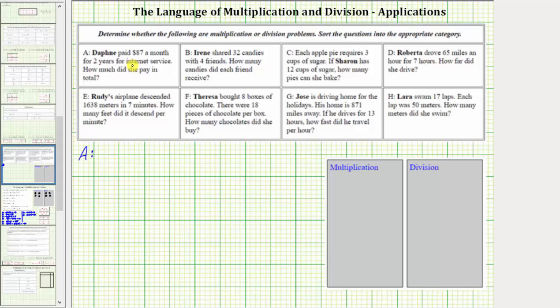To determine the total she paid, we multiply 24 and 87. 24 times 87 equals 2088, which means Daphne paid $2088 over two years for internet service. Now this question does not ask us to determine the product. It just asks to determine whether we use multiplication or division. Because we use multiplication, we enter A in the multiplication box.